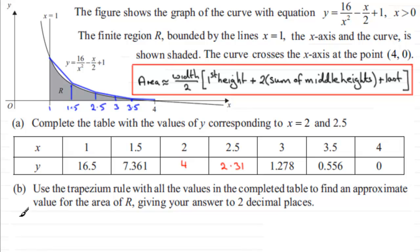So if we put the working in, what we've got is that that area then is approximately equal to, alright, because we're not getting the actual area of R, we're overestimating it in this example, is going to be the width of a strip. So that's 0.5 for the width. Divide that by 2. Okay, so we've got that bit. Multiply it by the first height. And the first height, this one here when x is 1, is 16.5.